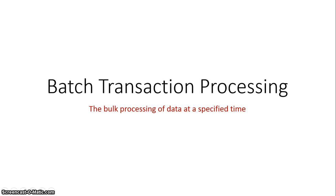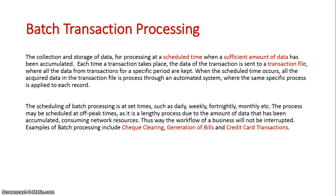Let's now take a look at batch transaction processing, which is the bulk processing of data at a specific time. With batch processing, data is accumulated over a specific period of time and it's all entered into a transaction file. Each time a new transaction takes place, it goes into this file at a specific increment of time — whether it be daily, weekly, fortnightly, monthly, or yearly. All this data in the transaction file will be processed in an automated system that applies the same process to each individual record.